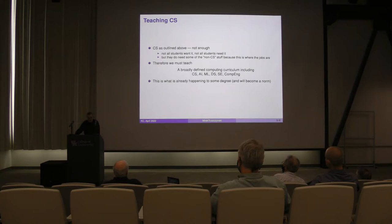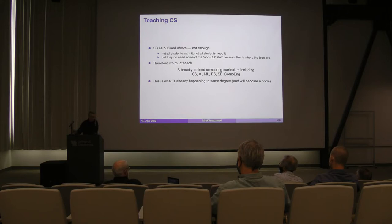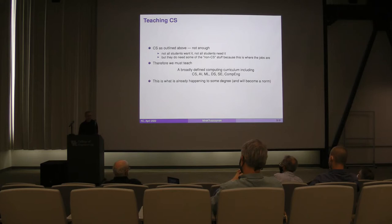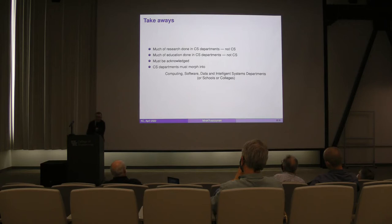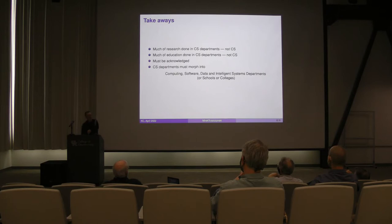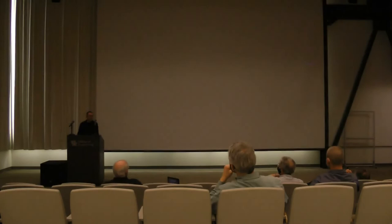So, the bottom line as far as teaching is concerned: we must teach a broadly defined computing curriculum, including CS, but also including AI, machine learning, data science, software engineering, and computer engineering. We have to have that in our computer science curriculum — and in fact, that's what's happened. The takeaways: much of research done in CS departments is not CS; much of education done in CS departments is not computer science. Once we acknowledge that, we will realize that CS departments must evolve into something broader — computing, software, data, and intelligence systems departments.